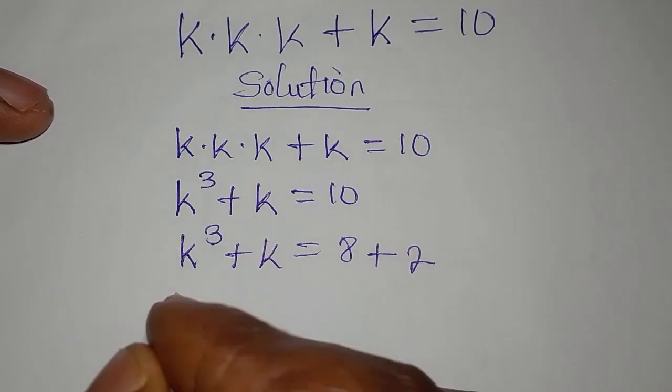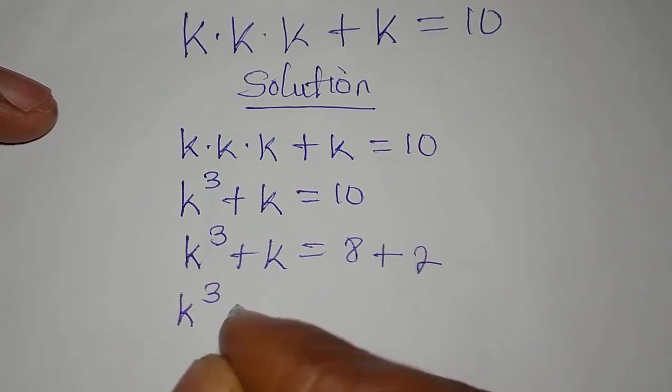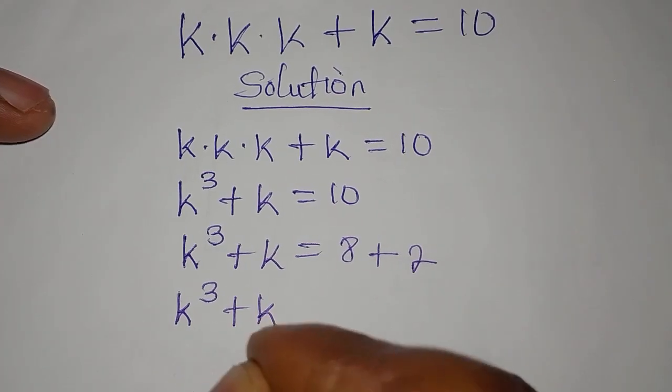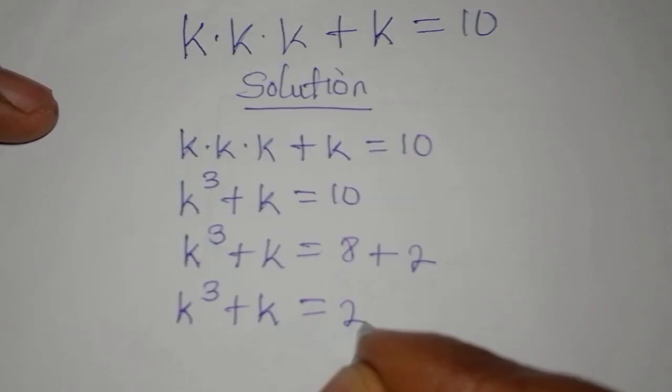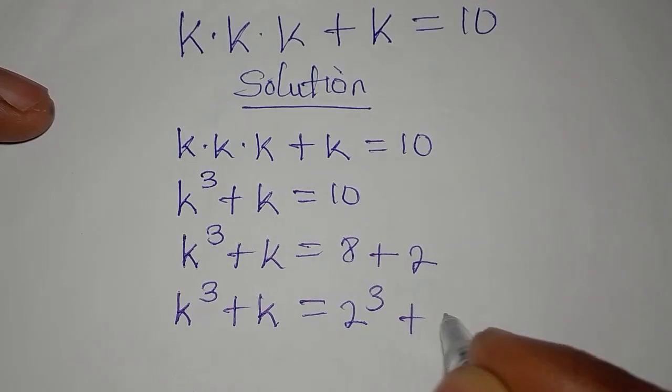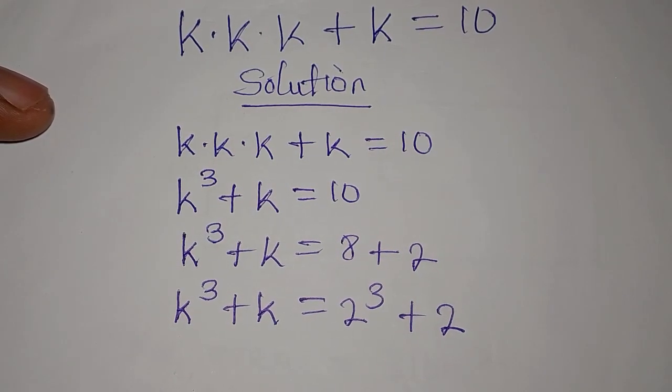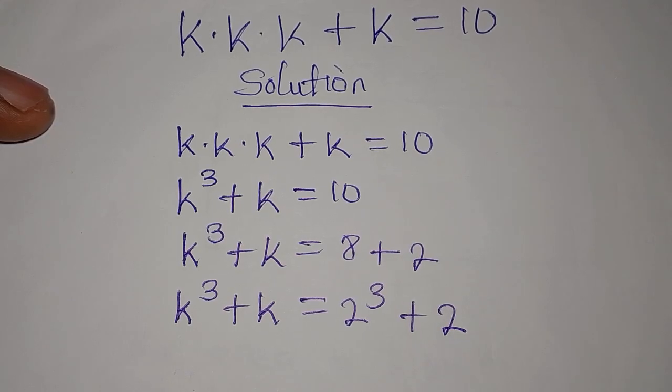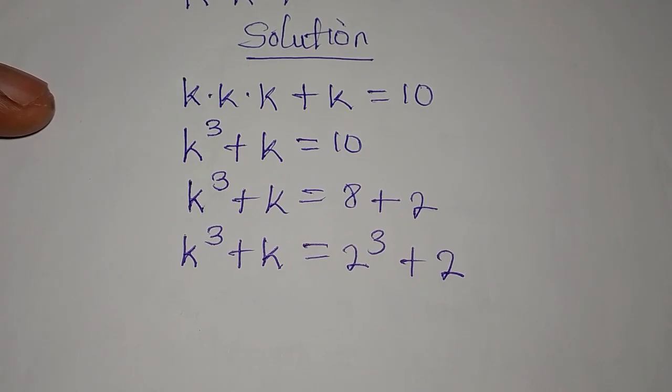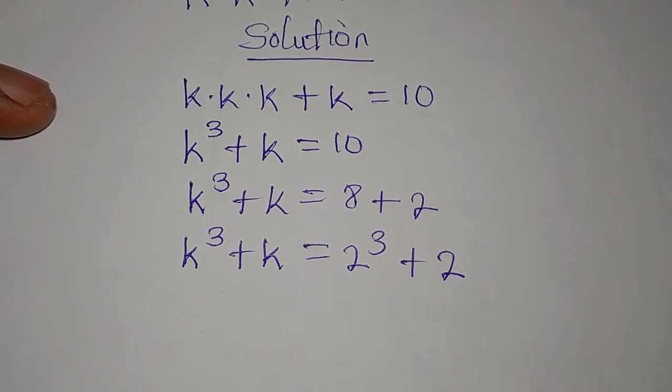So we have k to the power of 3 plus k equals 2 to the power of 3 plus 2, because 2 to the power of 3 is 8. And if you look at the left hand side and the right hand side now, you will see what I am talking about. Now, let us reposition.